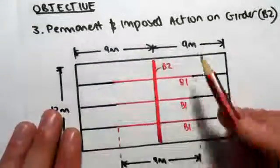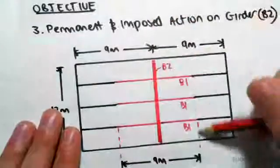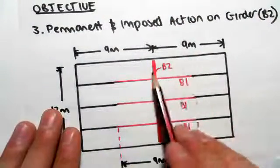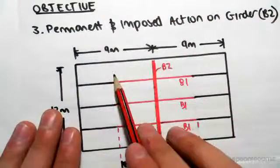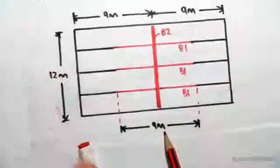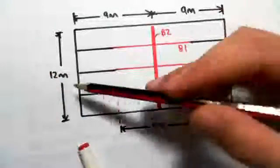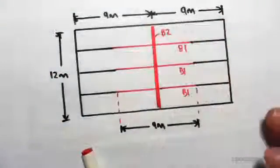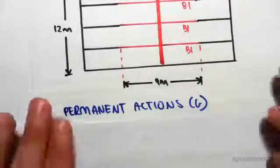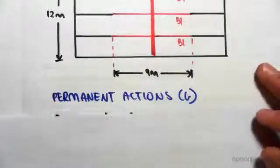Because it's nine meters and nine meters, we can divide this by two, giving us 4.5 going each way, which gives a total of nine meters. The length of this girder is 12 meters. The first thing we're going to do is find the permanent actions G, the dead load in the girder.